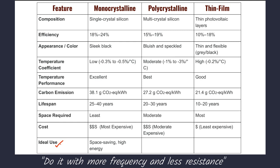The final feature is ideal use and applications. Mono-crystalline solar panels are best for residential and commercial projects with limited space or high energy needs. Poly-crystalline panels are suitable for budget-conscious residential and commercial projects with sufficient space. Thin-Film panels are perfect for large-scale solar farms, portable solar devices, disaster relief areas, and similar applications.